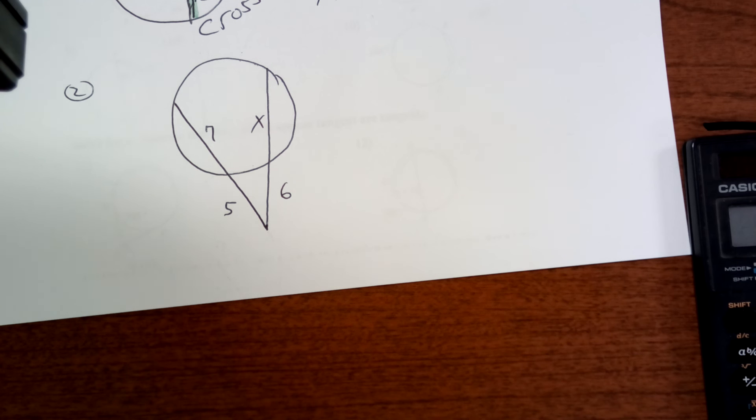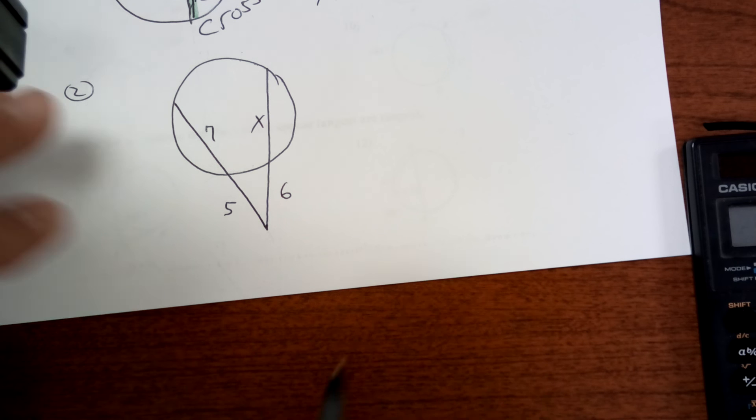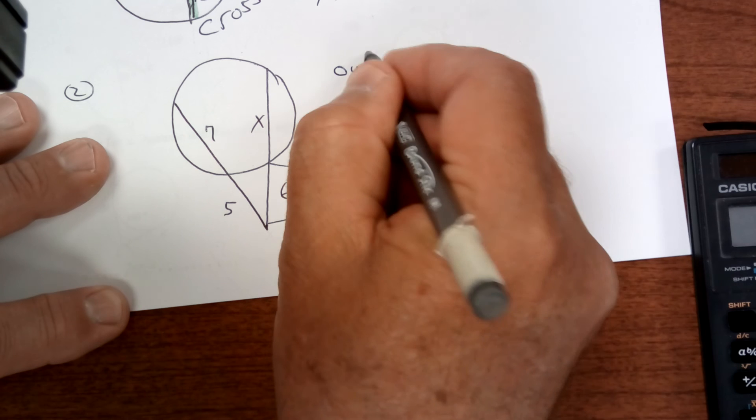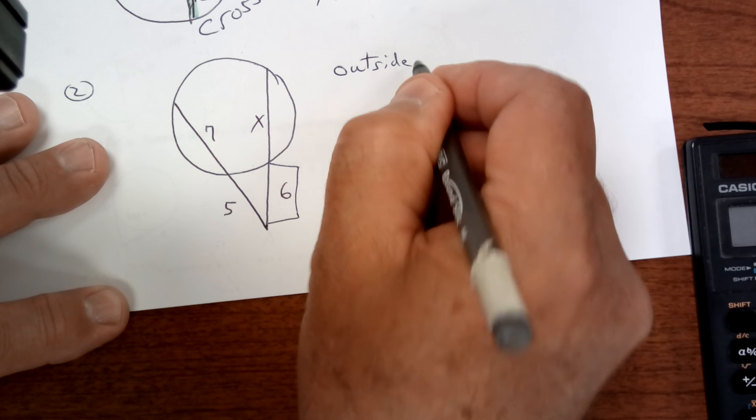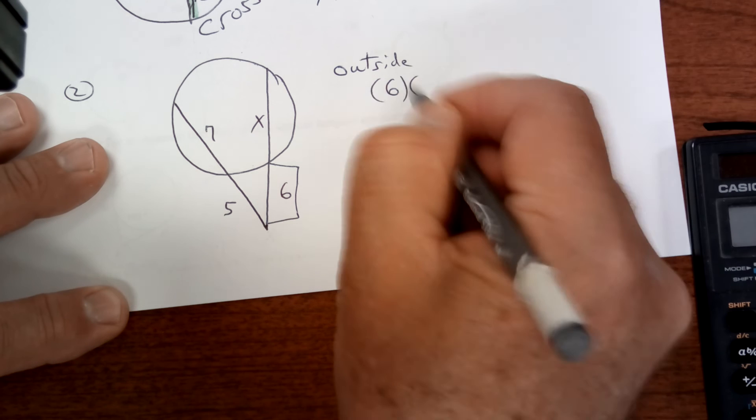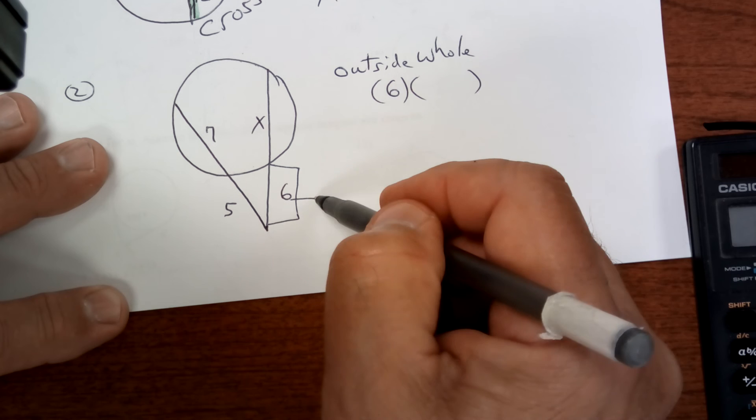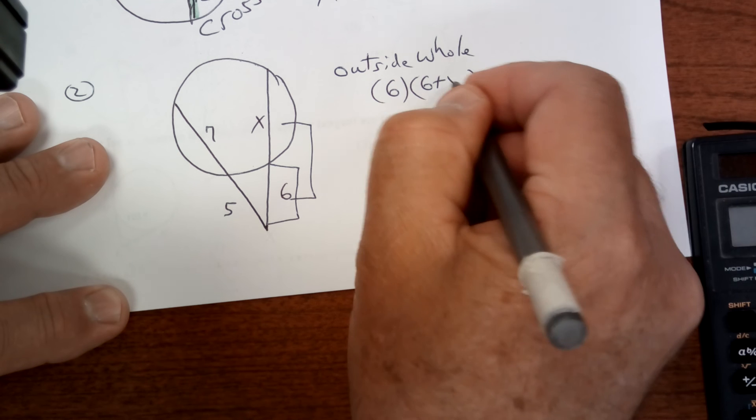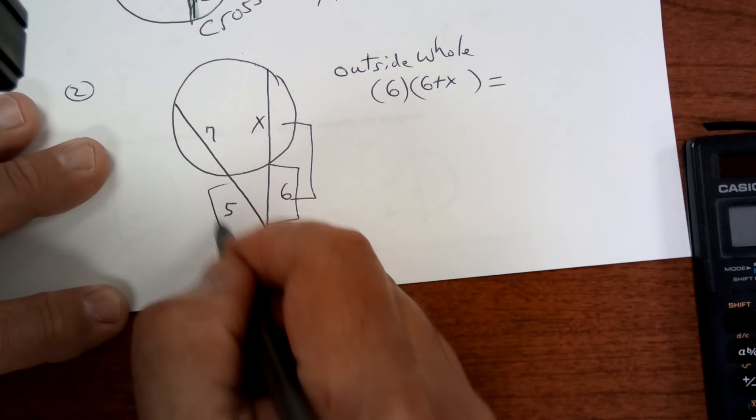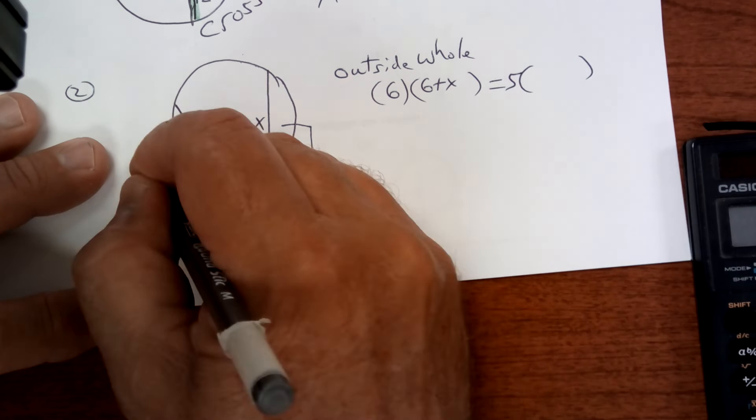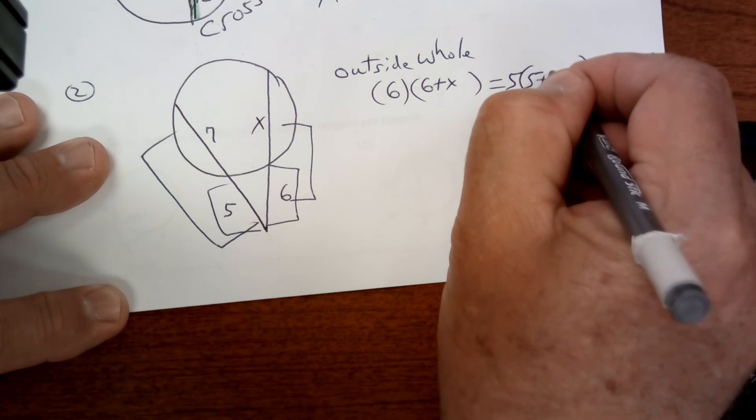So the formula is the outside piece, which is 6, times the whole thing. And the whole thing is 6 plus x, equals the outside piece, which is 5 plus 7. That's it. And then you've got to work it out.